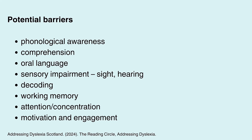Let's now consider potential barriers to reading and associated behaviours we may observe through assessment. The list of barriers on the slide is not exhaustive, and children may have difficulties in more than one area. Phonological and comprehension difficulties will be explored in more depth over the next two slides. As explored in the Importance of Oral Language for Reading video, the development of oral language underpins later reading progress. Difficulties in developing oral language skills can impact on reading, as children need to understand and generate spoken text before we can expect them to do this with written text. Studies have found that difficulties in reading comprehension can be predated by difficulties in oral language skills.